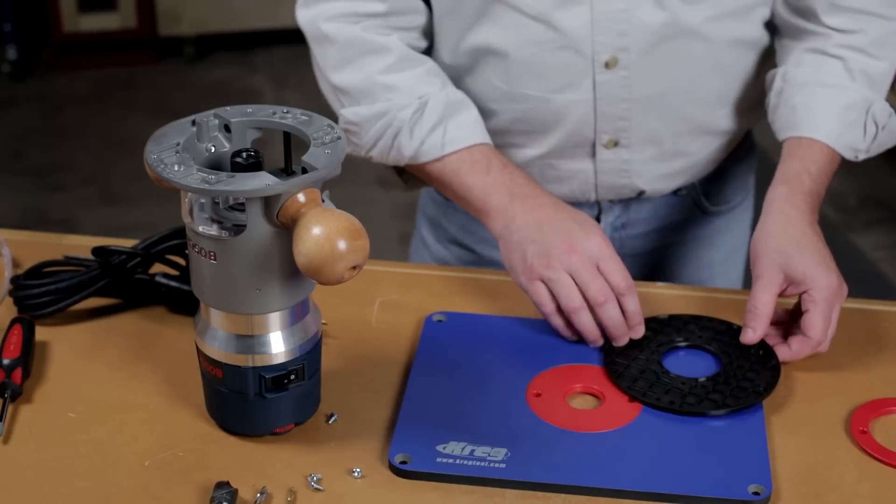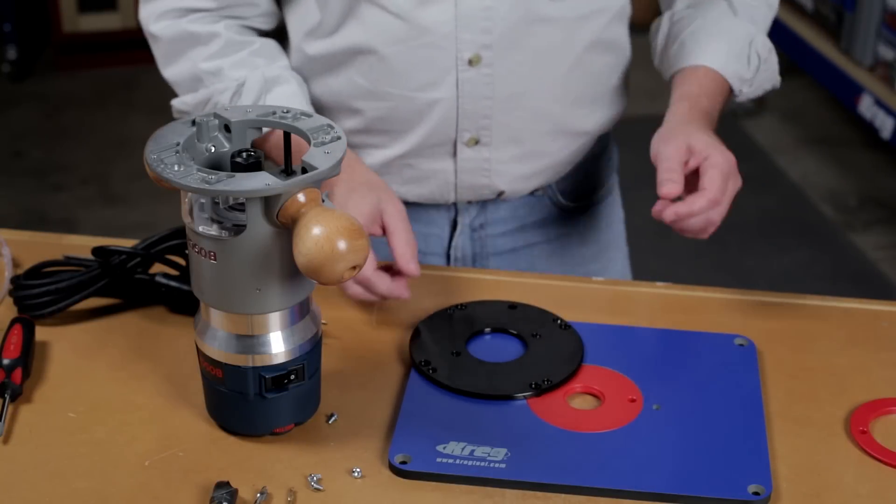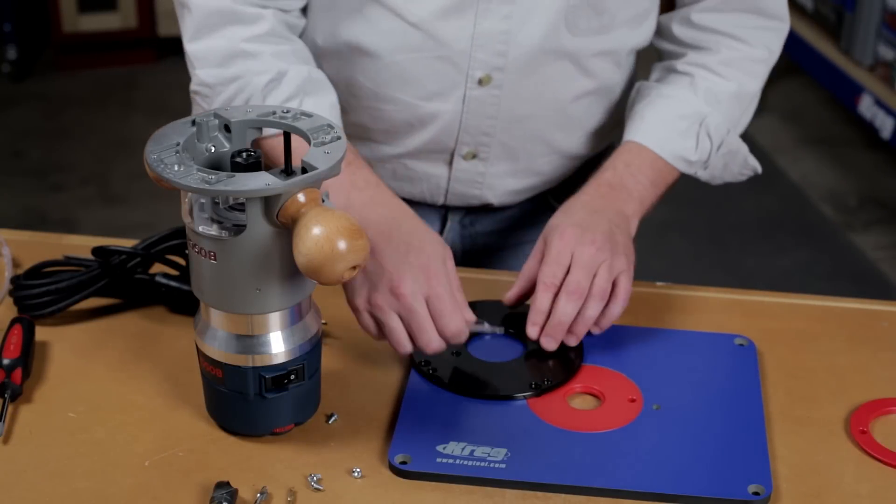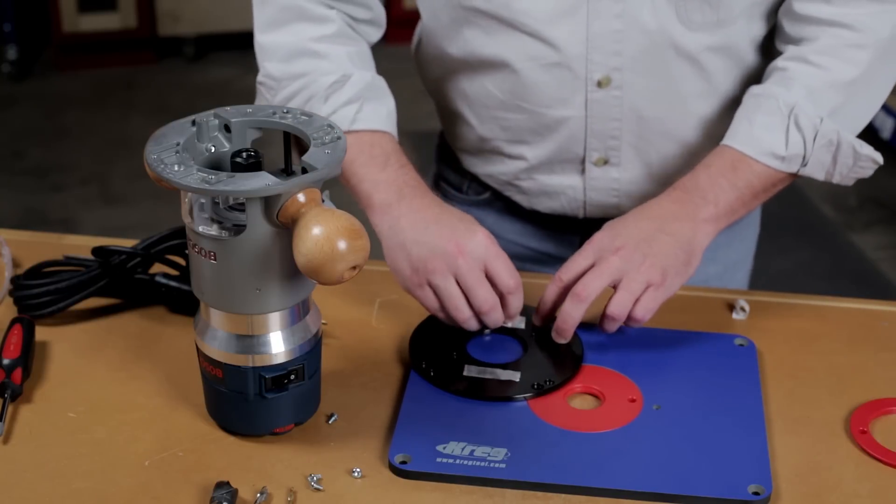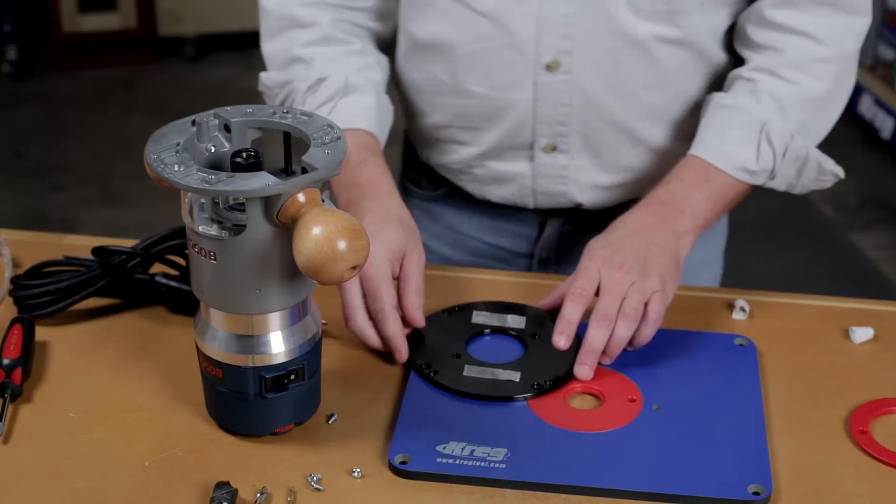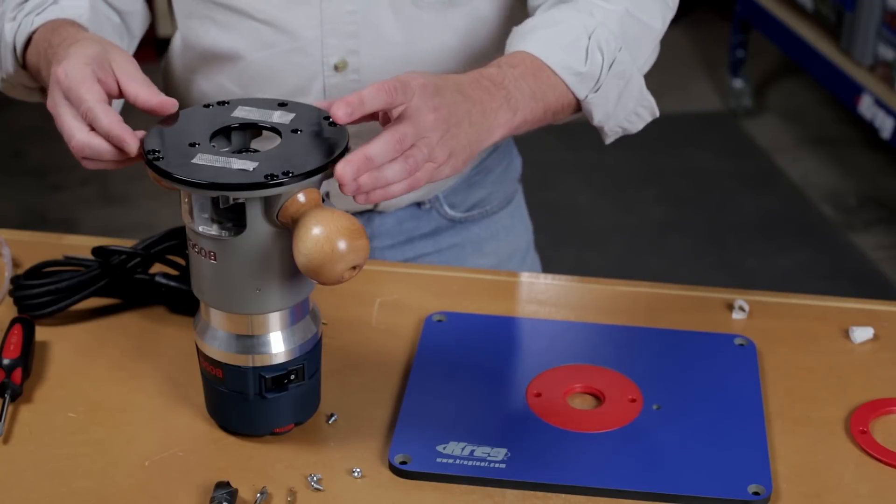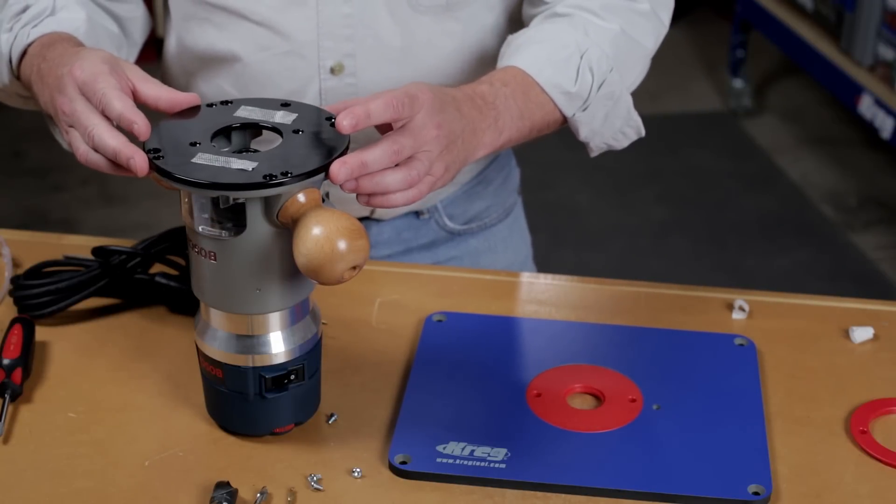The best way to start is to prep your subbase so you can use it as a guide. Just place a couple of pieces of double-sided tape or some rolled up masking tape on the subbase, then position it on your router so that all the holes are aligned.